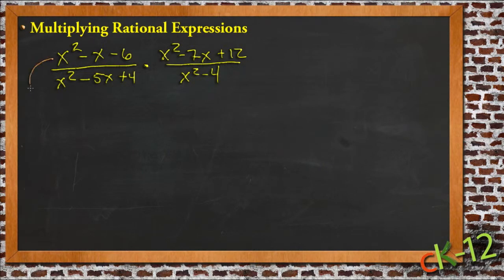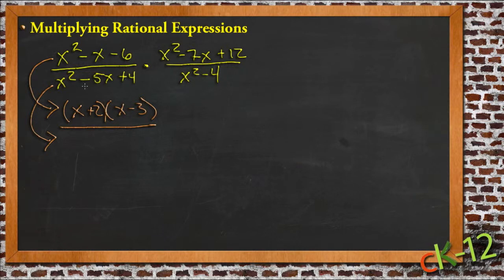First of all, our top first expression here, we need two numbers that multiply to be negative 6 and add to be negative 1. So this would be x plus 2 times x minus 3. And then the denominator of that expression would be two numbers that multiply to be positive 4 and add to be negative 5. So we have x minus 4 times x minus 1.